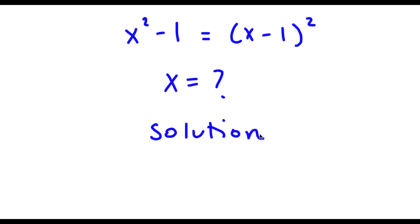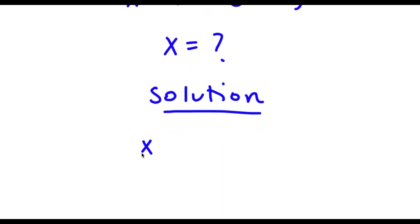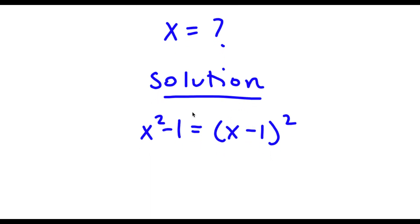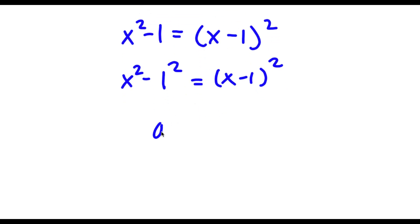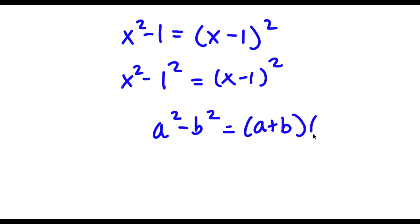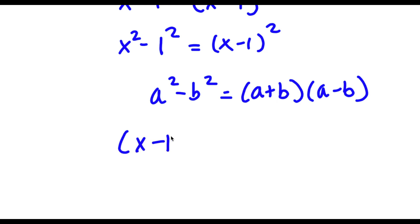For my solution, I start with x² - 1 = (x - 1)². Now, x² - 1 is the same as x² - 1², since 1 = 1². Applying the difference of squares formula a² - b² = (a + b)(a - b), I get x² - 1² = (x - 1)(x + 1). So now (x - 1)(x + 1) = (x - 1)².